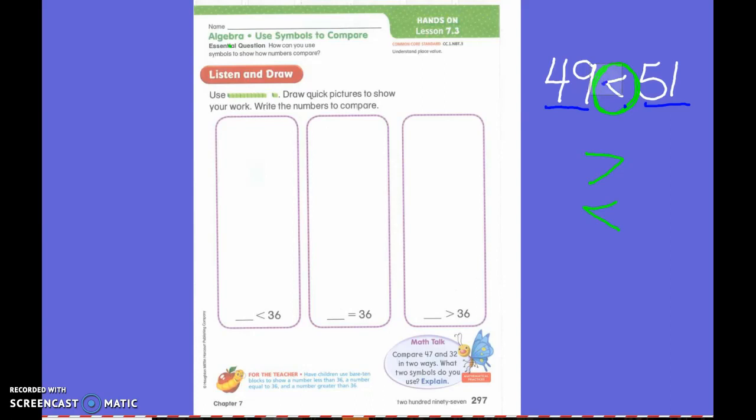And remember, my smaller number goes in the smaller point of my alligator, right? So, it says 49 is less than 51.